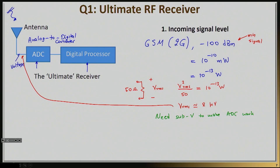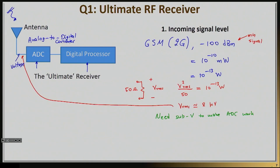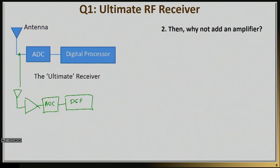You might say: if the signal level is too low, why not just add an amplifier right after the antenna and then do the previous thing? So we'd have the digital processing unit, the ADC, and an amplifier. How much amplification do we need? We have to go from this low power to sub-volts, so we need amplification in the order of roughly 100 dB. How realistic is it to make an amplifier at 1 or 2 GHz — very typical RF frequencies — with a gain of 100 dB?